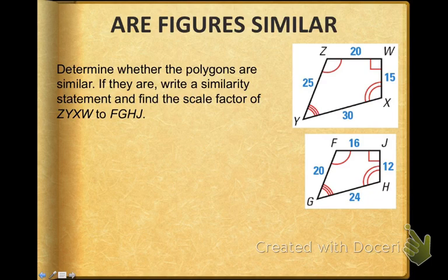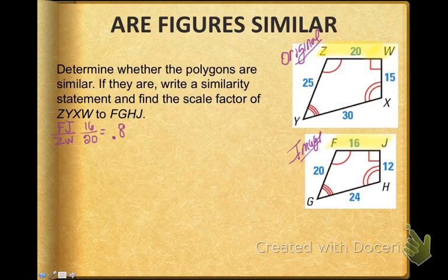So here's what we're going to do. We're going to say the first figure is our original and the second figure is our image. Remember, image is always over original in a scale factor. So I'm going to look at corresponding sides. I know that side FJ corresponds to side ZW, and I'm going to put numbers to that, which is 16 over 20. When I reduce that, that is 0.8.